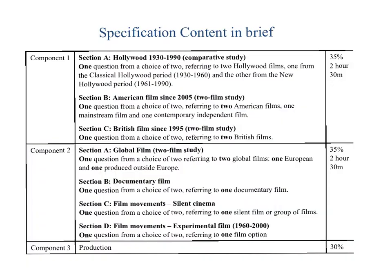The specification content in brief: Component 1 is made up of three sections, is worth 35% of the overall marks and is a two-hour and 30-minute exam. Component 2 has four sections, is also 35% of the overall marks and is also a two-and-a-half-hour exam. Component 3, the production — your own piece of filmmaking — is worth 30% of your overall marks.